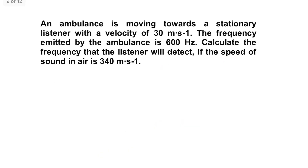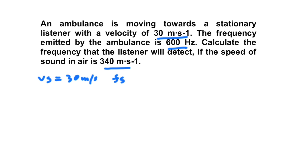Example 2: An ambulance is moving towards a stationary listener with a velocity of 30 meters per second. The sound source is moving towards the stationary listener. The frequency emitted by the ambulance is 600 Hz. Calculate the frequency that the listener will detect if the speed of sound in air is 340 meters per second. We are expecting the observed frequency to be greater than that which is emitted.